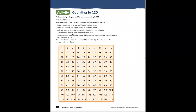Ask questions such as: what is one more than 109? Choose a starting number for your child to count on from, either for a short range or all the way up to 120. Draw a number of objects, have your child count them, and then find the number on the 120 chart. There are many different ways that you can incorporate this fun learning game at home.